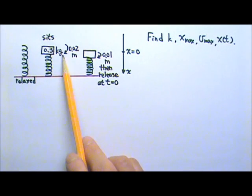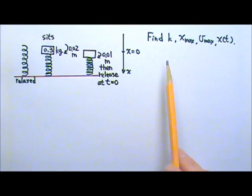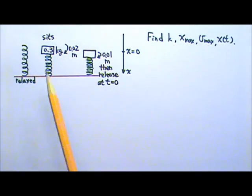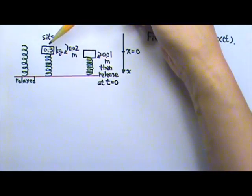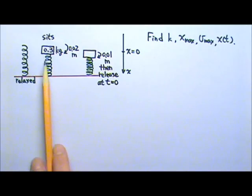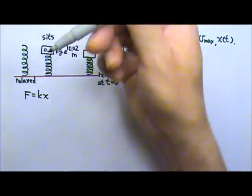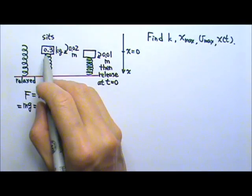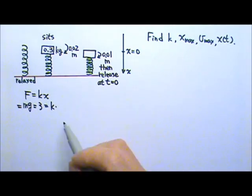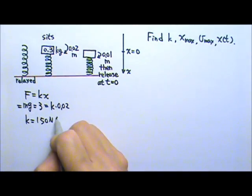Let x equals 0 at this position. To find the spring constant, we can use this piece of information. When the 0.3 kg box sits on top of the spring, it is balanced and in equilibrium — the net force is 0. The downward mg gets cancelled by the spring's upward pushing force. So we use f equals kx because the forces are balanced: kx equals mg, which is 3 newtons for the 0.3 kg box. This equals k times the compression 0.02, therefore the spring constant is 150 newtons per meter.